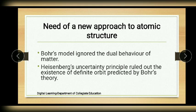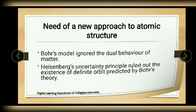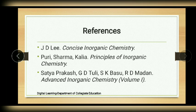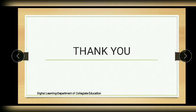These shortcomings of Bohr's theory lead to the need for a new approach to atomic structure — one that explains the dual nature of matter and is consistent with the Heisenberg uncertainty principle. The solution came with the emergence of quantum mechanics. This completes the session on atomic structure. Thank you.